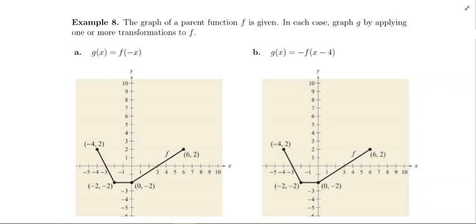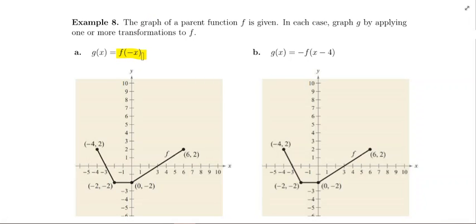We have our parent function f, and we are trying to graph a new function g of x. To get g of x, you're basically graphing f of negative x. The parent function has four points emphasized: negative 4, 2; negative 2, negative 2; 0, negative 2; and 6, 2. All you have to do is figure out where those four points go under the transformation, and then connect your new dots with the same basic shape.